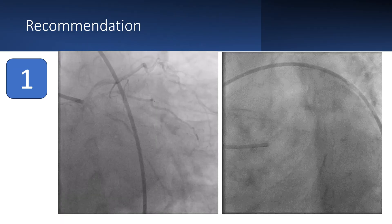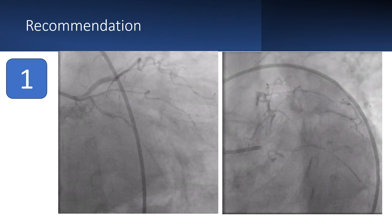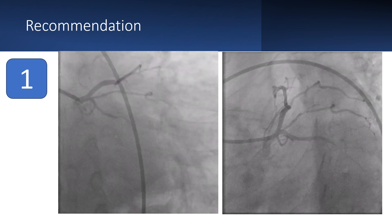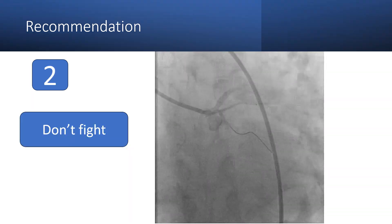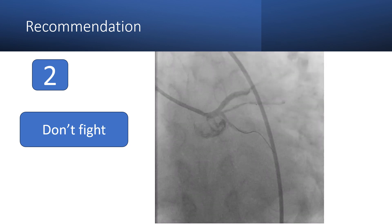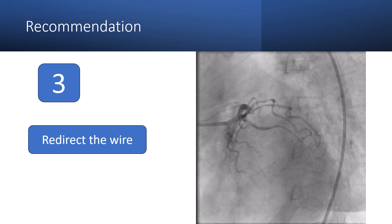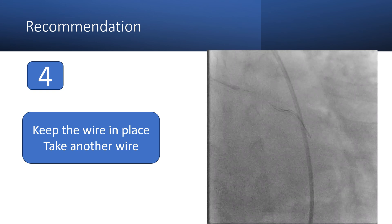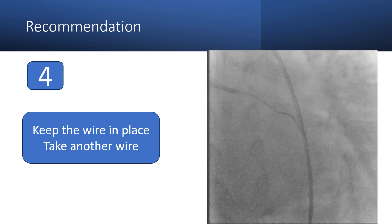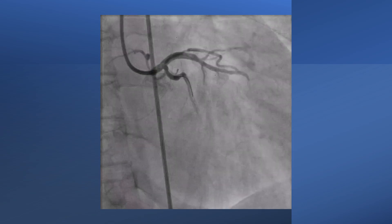So the recommendation is: first, when you find a near-total occlusion, take multiple views to identify a micro-channel that you can negotiate with the wire. Look at this circumflex with distal subtotal occlusion in a patient with unstable angina. If your wire is stuck at the lesion, don't fight the lesion — redirect the wire. If there is still resistance, put another wire; keep the first wire in place and take another wire. Look here where the second wire made its way through the true lumen and passed distally. And this is the final result.